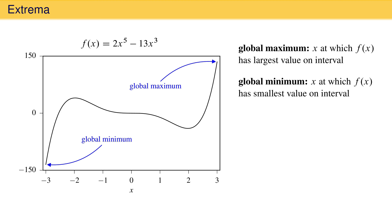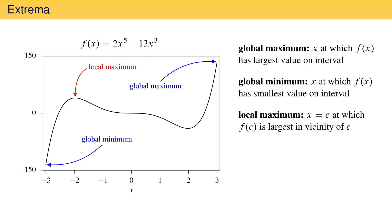Between the global minimum and maximum there is an x-coordinate near minus 2 at which the function becomes relatively large compared to points around it. It is not the global maximum on the interval shown, but it is clearly a point at which the function is larger than at points around it. This is called a local maximum. A local maximum is a point, call it x equals c, at which the function is largest in the local vicinity. The local vicinity of point c is the region right around and on both sides of c. For a point to be a local maximum, the function must become smaller moving away from that point in both the positive and negative x-directions.